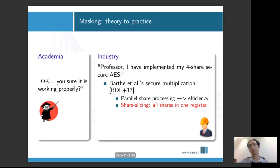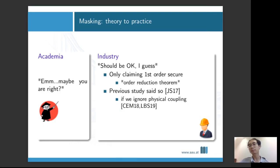Then a few days later, the engineer says, professor, I've implemented my full share secure AES. Specifically, I find this secure multiplication which works in parallel. They adapt quite well in my software development framework. Because it's operating all the shares in parallel, it's actually quite efficient. In order to do so, I have to store all the shares within one register, which will be called share slicing in this talk. The researcher says, are you sure your scheme is working properly?